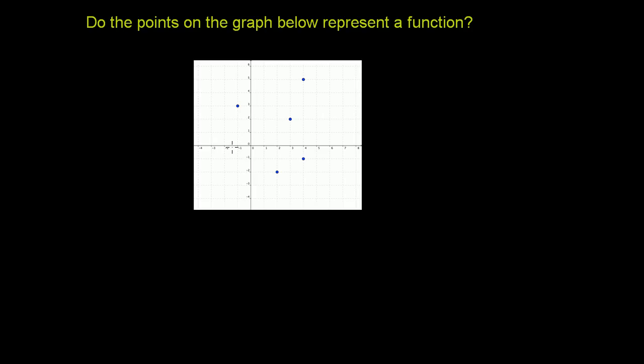If we look here, they've graphed the point (-1, 3). If we assume that this is our x-axis and that is our f(x)-axis, this point is telling us that if you put -1 into our function, or the thing that might be a function, or maybe our relation, you'll get a 3.